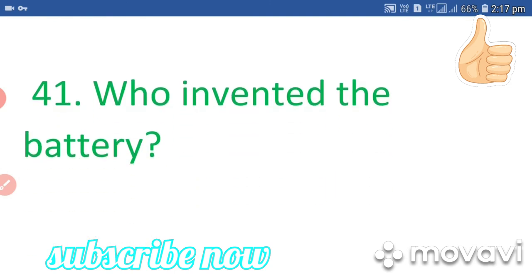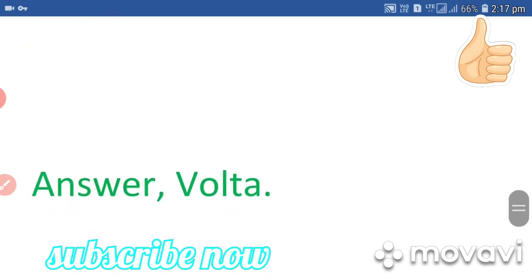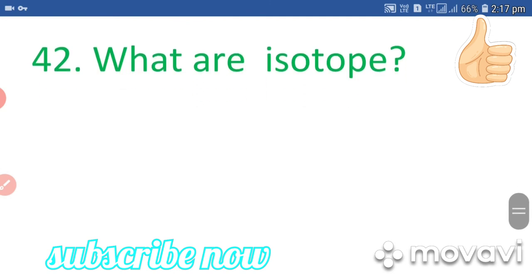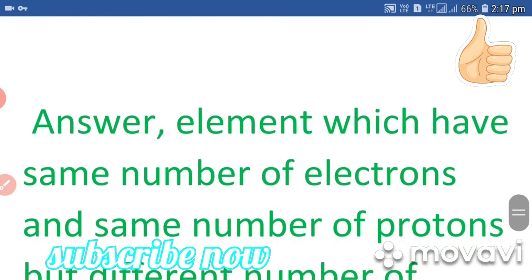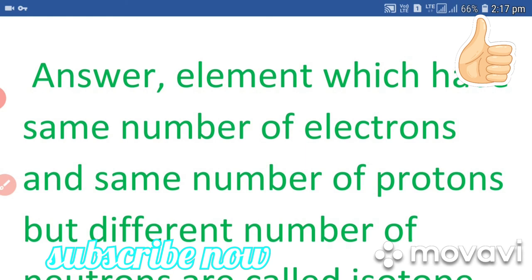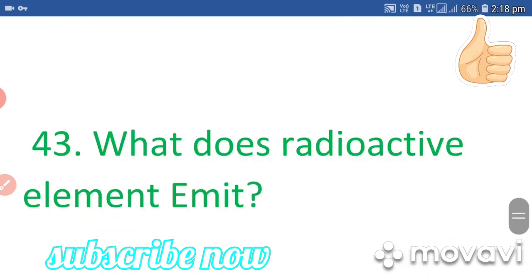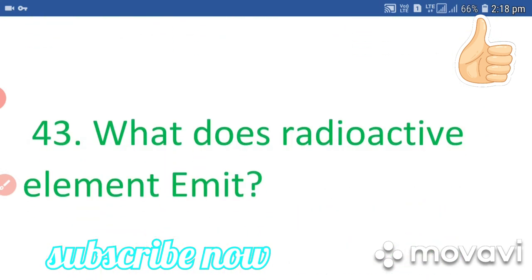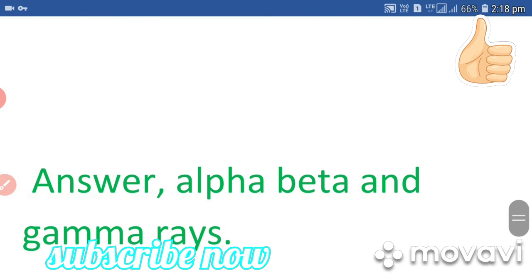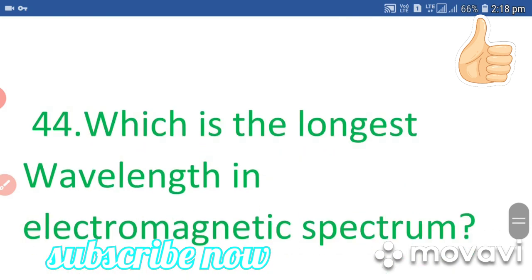Question 41: Who invented the battery? Answer: Volta. Question 42: What are isotopes? Answer: Elements which have the same number of electrons and the same number of protons but a different number of neutrons are called isotopes. Question 43: What does a radioactive element emit? Answer: Alpha, beta, and gamma rays.